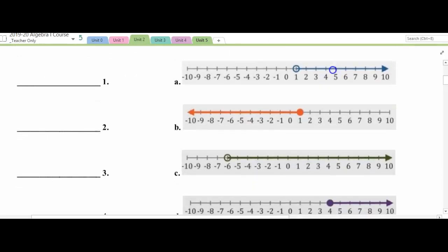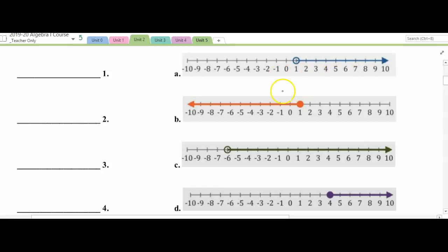You'll notice for all four of these graphs we're always going to have an X compared to some number, and the number is found by the circle or the dots. So for example on A it's a 1, B is 1, C is negative 6, and D is 4.